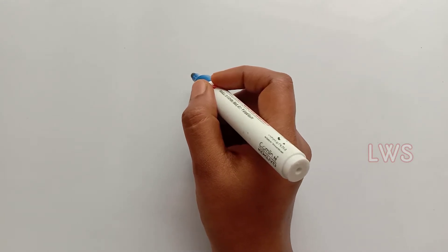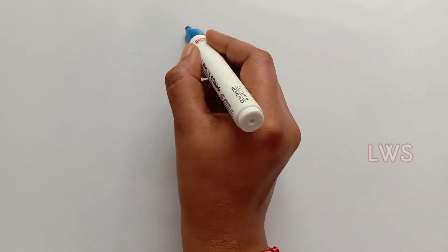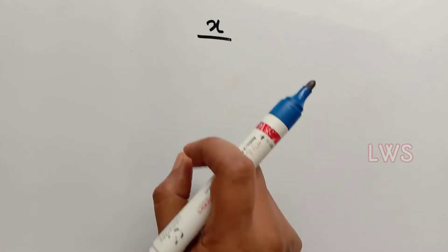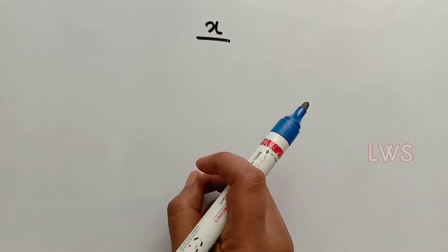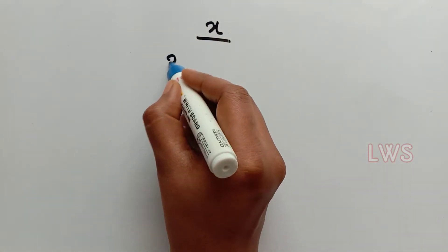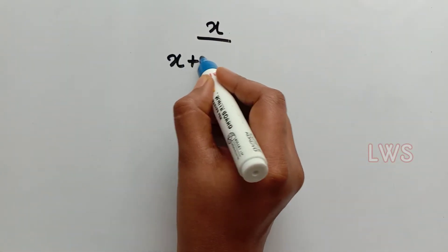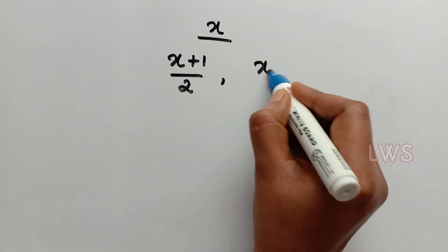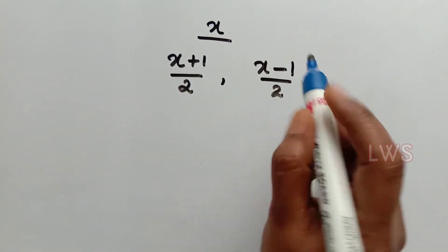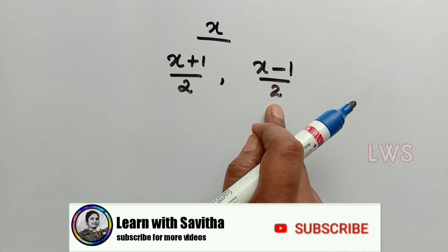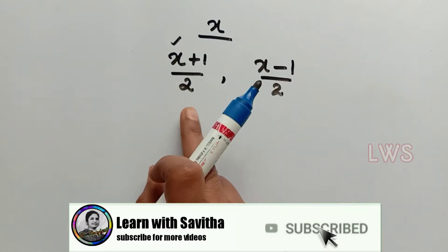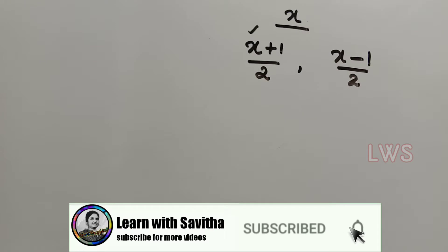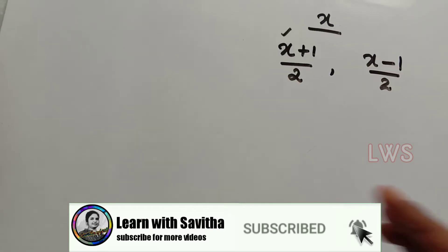Before learning the procedure, we can understand some concepts. Let x be any real number. Consider x plus 1 by 2 and x minus 1 by 2. Clearly, x plus 1 by 2 is larger than x minus 1 by 2.